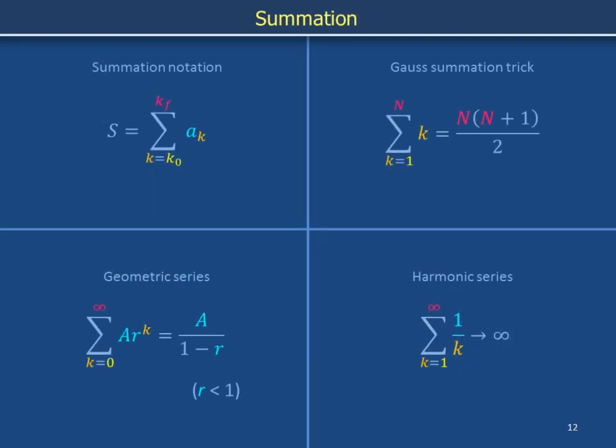We've just studied an example of an infinite series that converges. Its running totals become arbitrarily close to a number, A over 1 minus r, as more and more terms are added. The condition, r is less than 1, means that terms in the series become successively small.